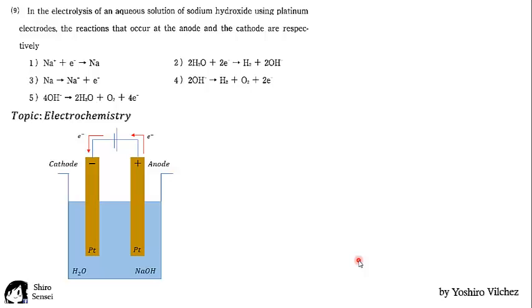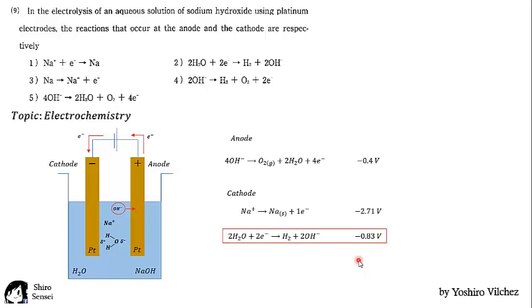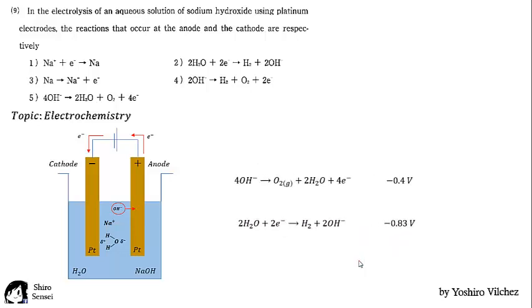In the solution we have sodium cation and hydroxide ion and water. In the electrolysis, the negative charge ions go to the anode oxidating itself and the positive charge goes to the cathode reducing itself. Now we have on the anode the oxidation of hydroxide ion with a potential of minus 0.4 volts. And at the cathode we have 2 possible reductions, the sodium cation and water. We compare the potentials and we choose the more stable which is the less negative which is water. Finally we find the electrochemical reaction balancing both reactions.